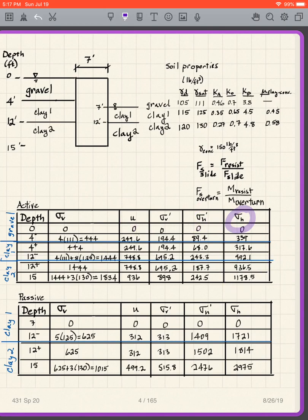And then when we come to the passive zone, now I'm looking on this side. So at depth seven, I've got zero because there's nothing above it. And then at depth 12 minus, I simply have five feet of clay one. And then that's 625. Those two are the same. You remember why that is? And then at 15, I have what? I have five feet of clay one plus three feet of clay two. So I got the 625 plus three times 130. And then now my U. What do I have? I've got five feet times 62.4 there, also there. And then down at the bottom, I've got eight feet times 62.4 gives me the 499.2.